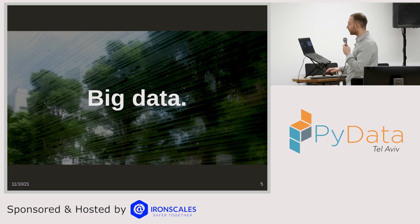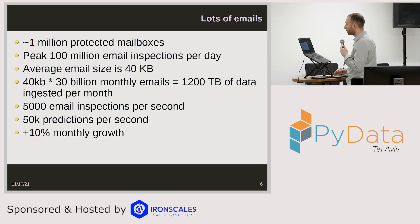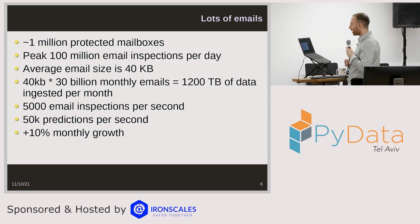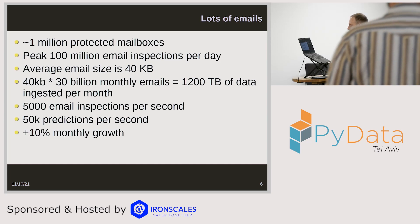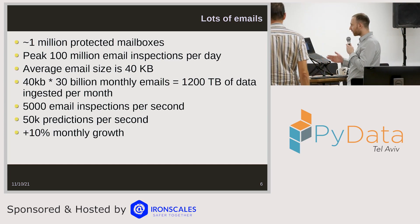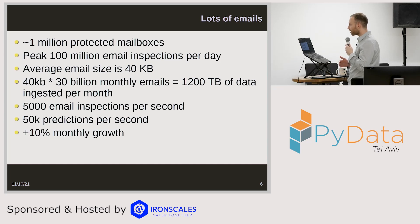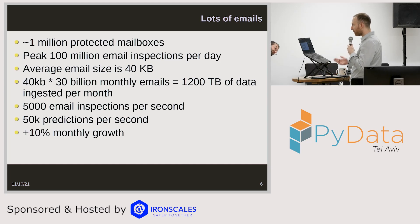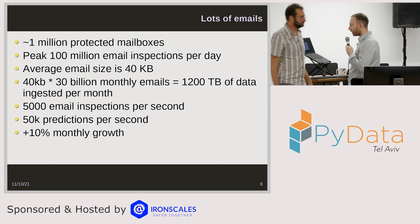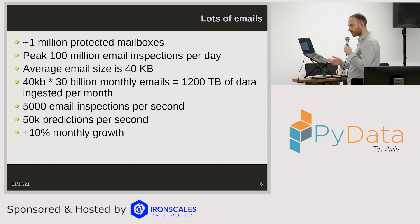So how do we do this? Using big data. One of our advantages and challenges is that we have a lot of emails and a lot of data to go through. At ArnSkills, we have around 1 million protected mailboxes, 100 million inspected emails per day. If you calculate that at the average email size, we actually ingest petabytes of emails per month. That works out to many thousands of email inspections per second and many tens of thousands of predictions per second, because we make many different predictions for a specific email. And this is a challenge because our systems are constantly growing.